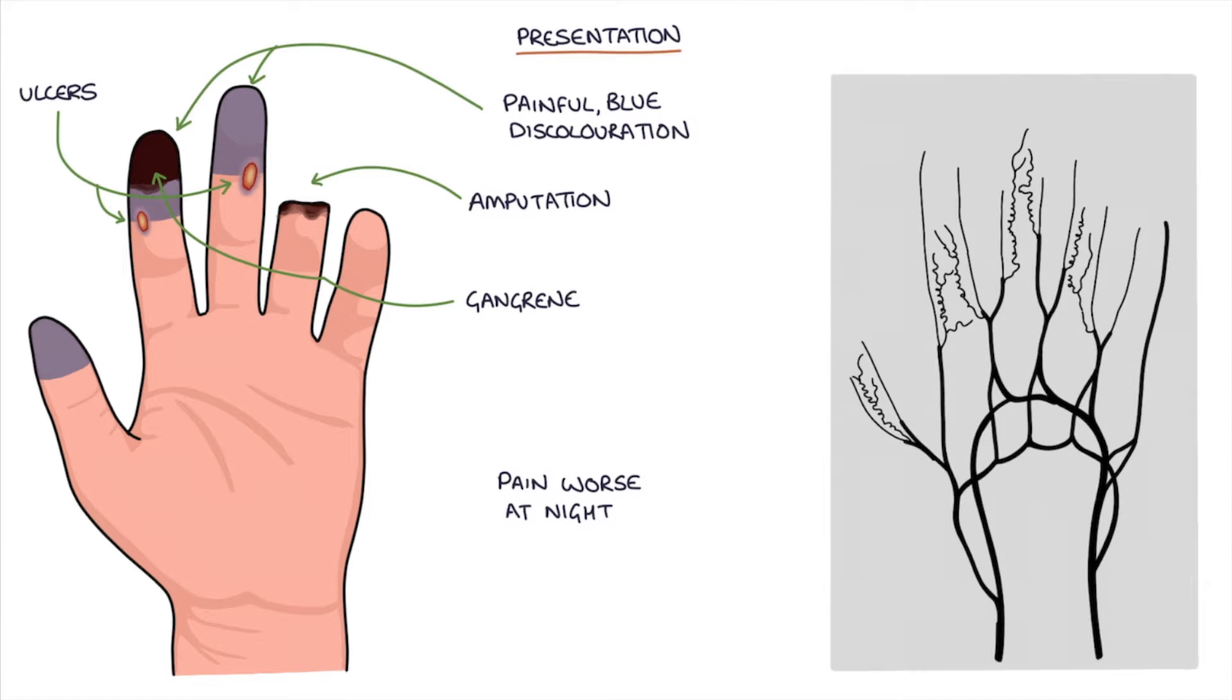A typical finding on angiograms is corkscrew collaterals, where new collateral vessels form to bypass the affected arteries.